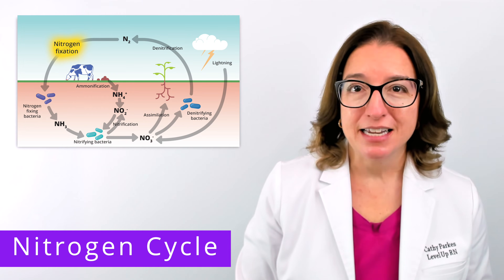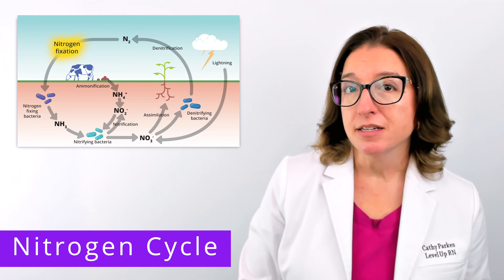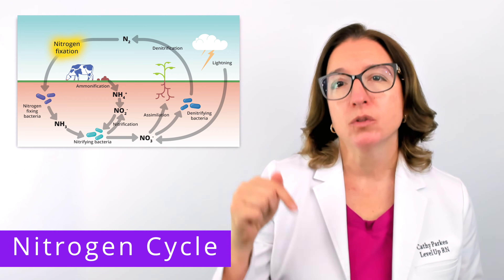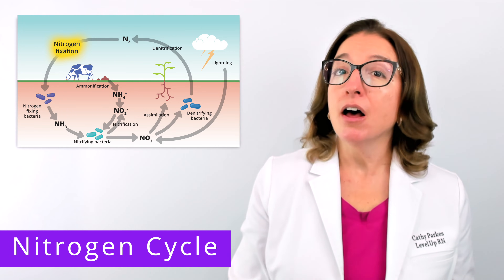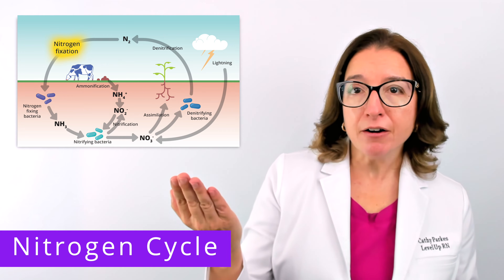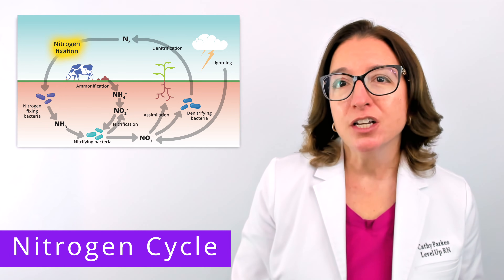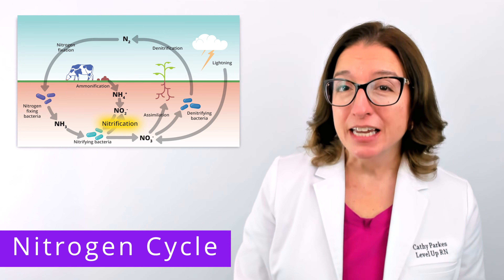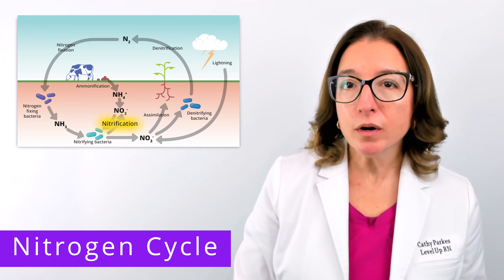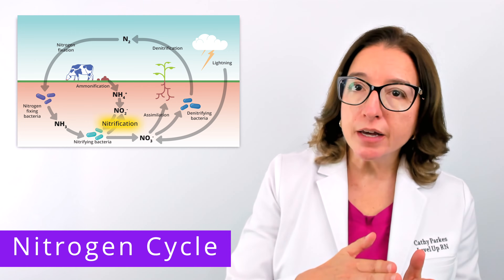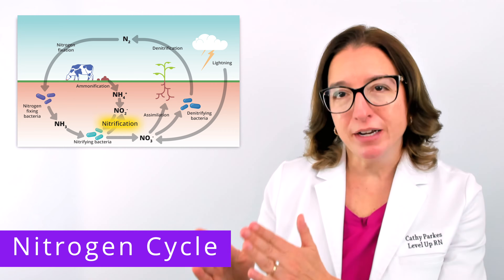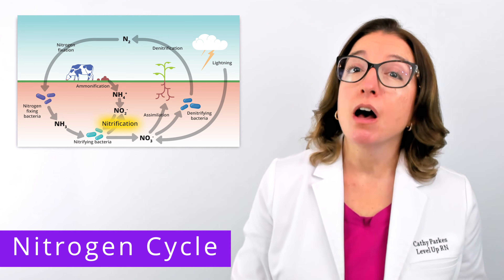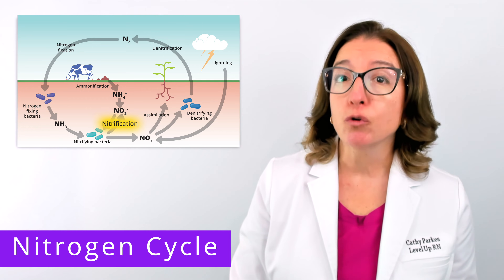During nitrogen fixation, prokaryotic organisms convert nitrogen gas in the atmosphere to ammonia in the soil. Plants are unable to use nitrogen in the air, so nitrogen fixation converts nitrogen to a form that plants can use. During nitrification, other prokaryotic organisms convert ammonia into nitrite and then into nitrate, which is the form of nitrogen most commonly used by plants for growth and development.